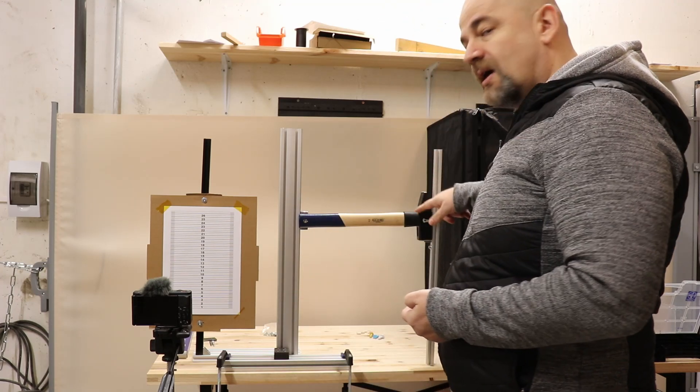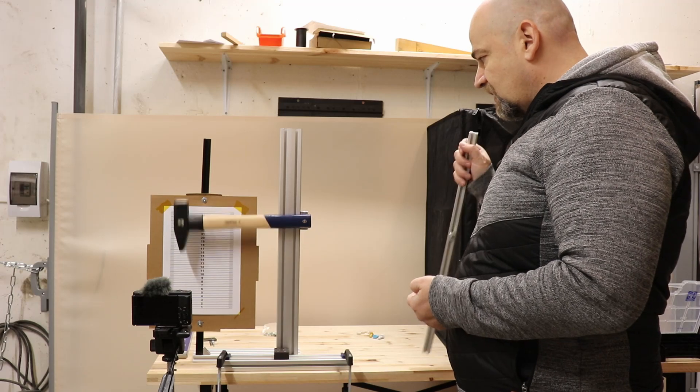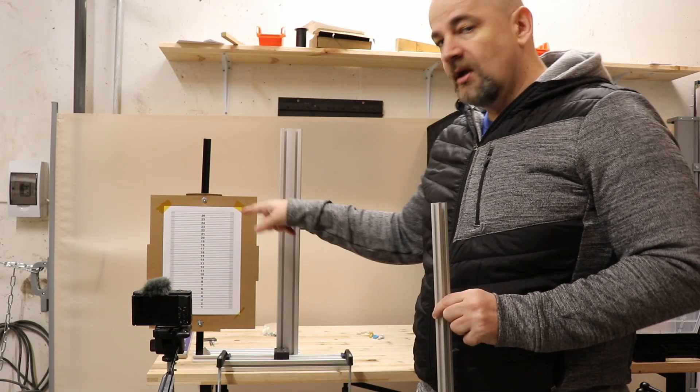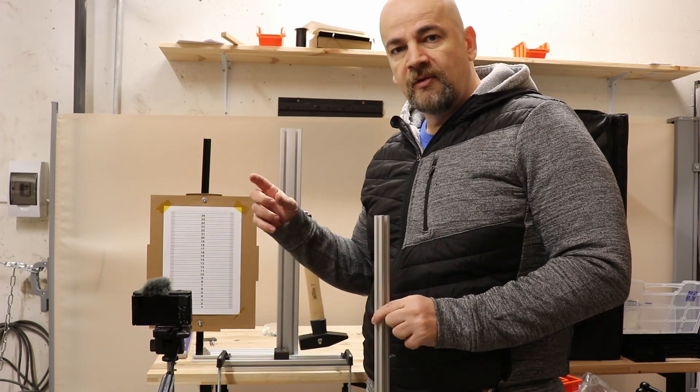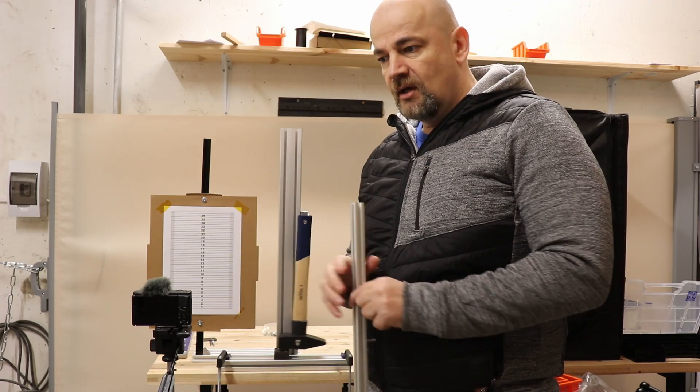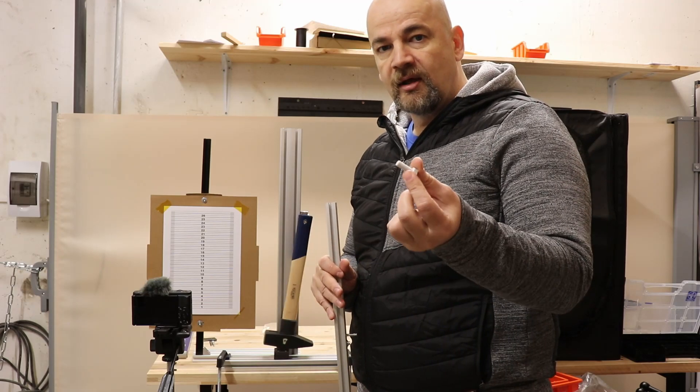The impact test is based on a hammer which will break the test specimen and swing to the other side. And depending what is the height on the other side, I can calculate from the difference of potential energy how much energy is used for breaking the test specimen.